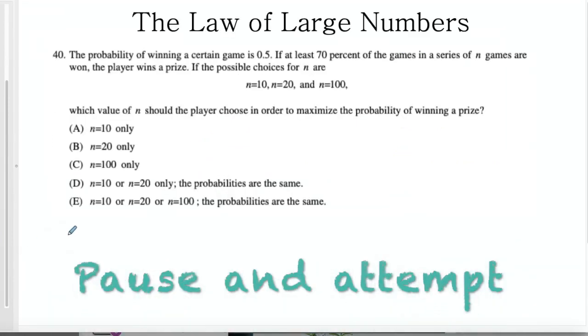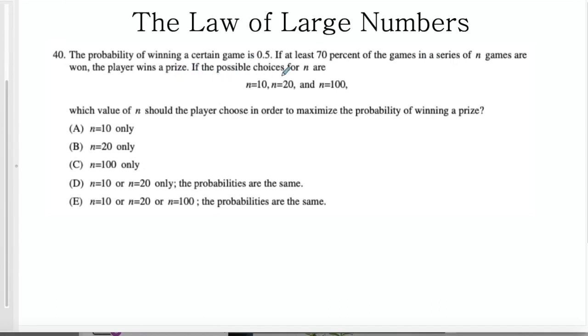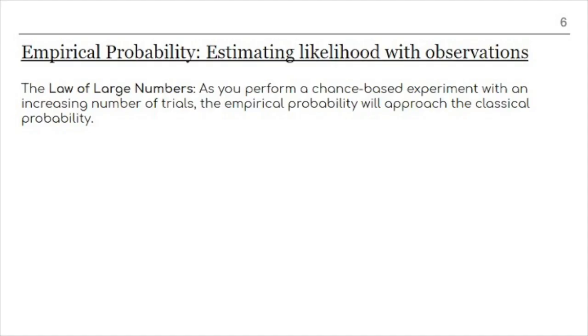Okay, here's a question. This is an interesting question that if you apply the law of large numbers, it's actually a very easy question to answer. If at least 70% of the games in a series of N games is won, the player wins a prize. Here are the possible choices for N. Which value of N should the player choose in order to maximize the probability of winning a prize? Since the mean, the probability of winning, is 0.5, and we want at least 70%, that's an extreme result. We should choose the smallest sample size. Think about flipping a coin 10 times. You're more likely to see extreme results under those circumstances than if you were to flip 100 times or 1,000 times. As you increase the number of trials, the empirical observed results will approach the theoretical results. So if you want a result that's far from that, like 70% or more extreme, you need to do a smaller number of trials.